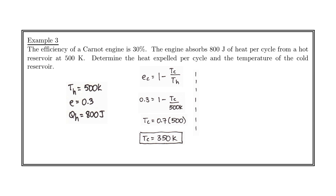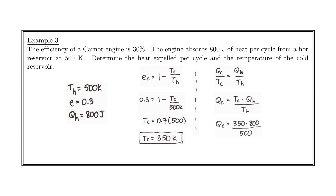For part B, we use the proportion QC over TC equals QH over TH because we want to find the heat expelled QC. We rearrange, substitute, and solve, finding that 560 joules of the 800 is given off to the cold reservoir.